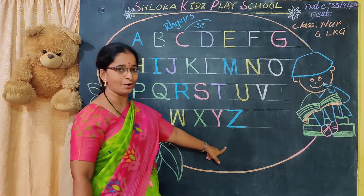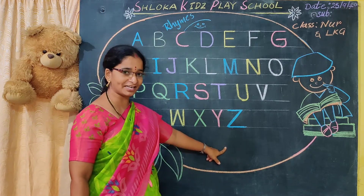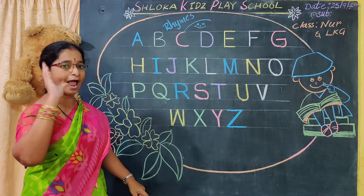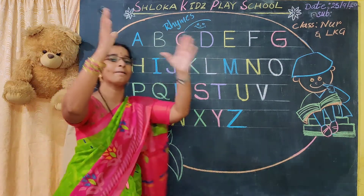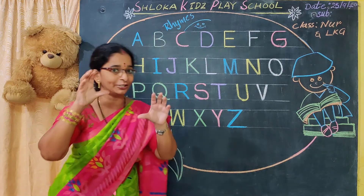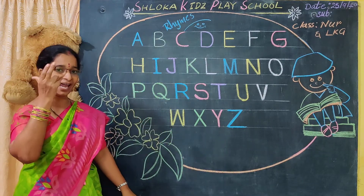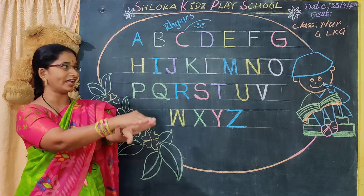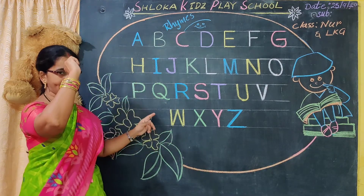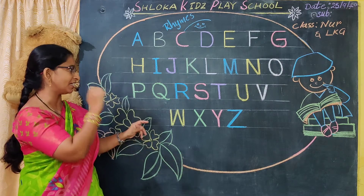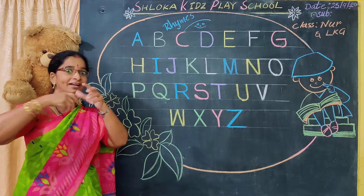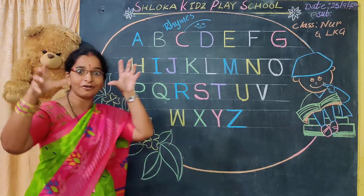So like this we have to practice. Once again shall we read? A for apple. B for ball. C for cat. D for dog. E for egg. F for fish. G for gun. H for hat. I for ice cream. J for jet. K for kite.